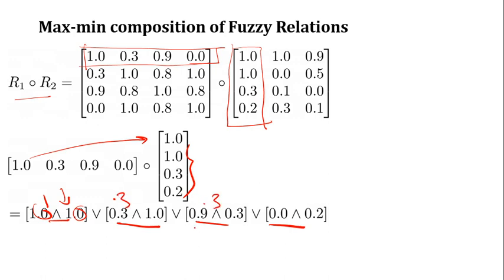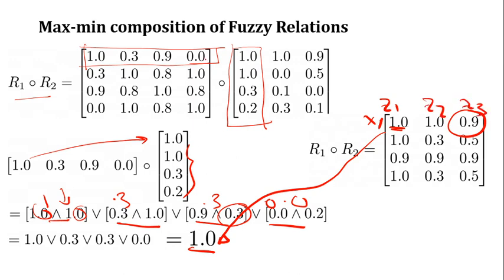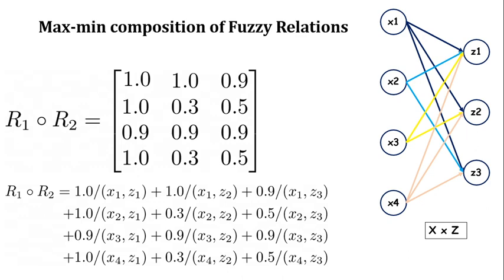We got 0.3 because 0.3 is smaller than 0.9, and another value is 0. Now you apply the max operator to get the final score, which indicates the relation between X1 and Z1. If you want the relation between X1 and Z3, you take the first row and the third column. This final output indicates the membership function value between X1 and Z1 in this relation, which is 0.0.